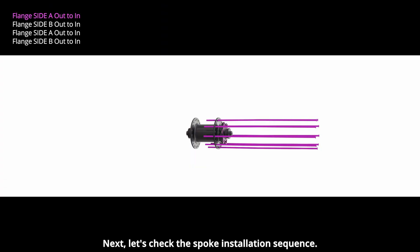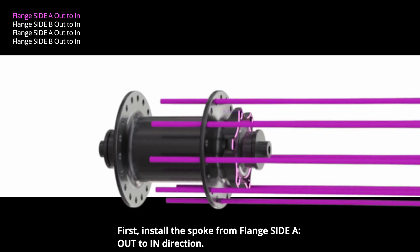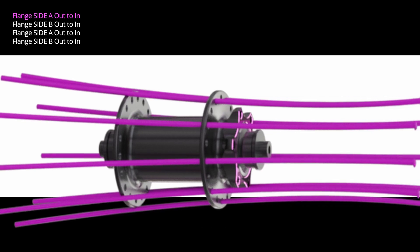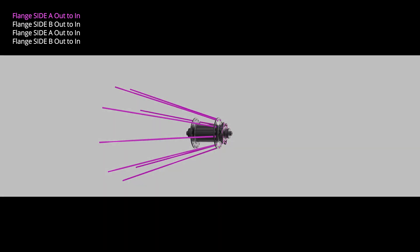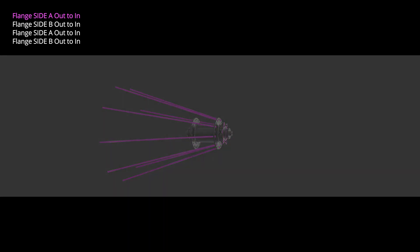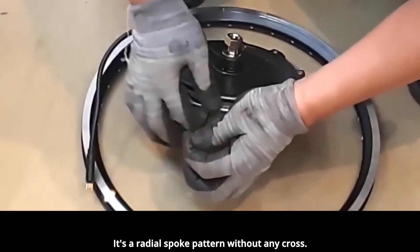Next, let's check the spoke installation sequence. First, install the spoke from flange side A out to in direction. It's a radial spoke pattern without any cross.